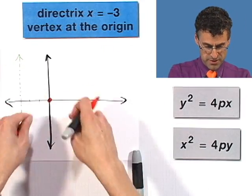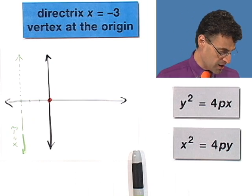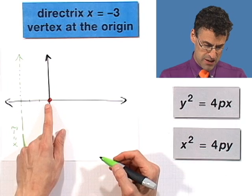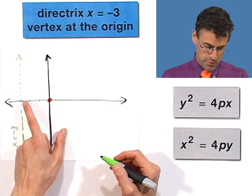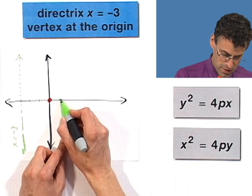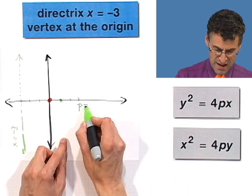But we don't know if it's going to go up or down or left or right or anything. But now we can figure that out because where does the focus have to be? It has to be equidistant from this point to that point right there, which means it has to be on the other side, 3 units, 1, 2, 3. So that's the p-value, and that has to equal 3.